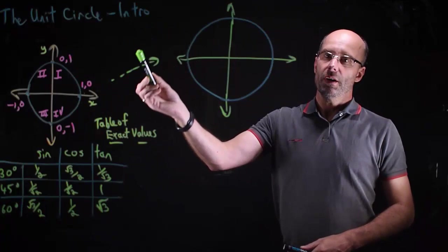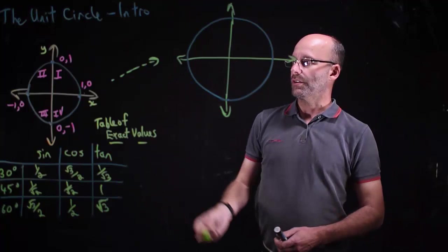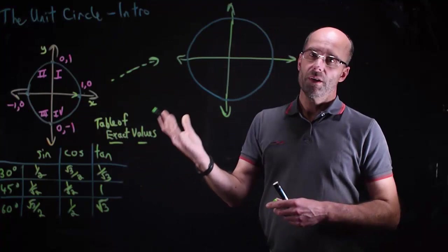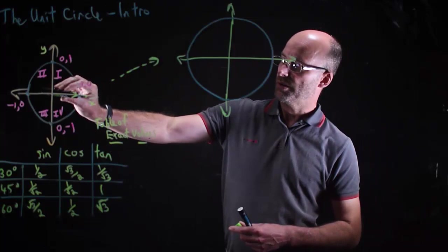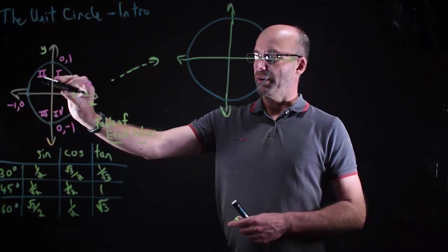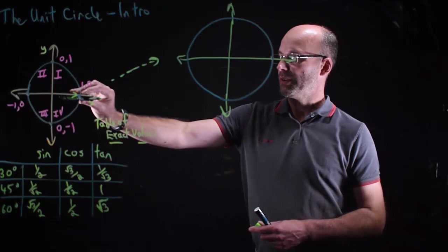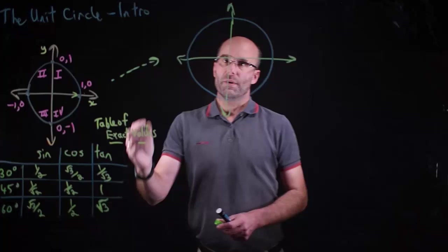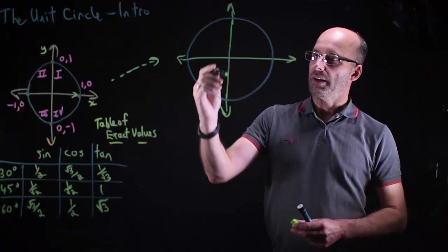In part two we're going to apply this to the unit circle. I've added a larger unit circle, and you'll notice it has Roman numerals — that means quadrant one. The convention for the radius arm is to swing anti-clockwise, which is the opposite of bearings. It goes anti-clockwise from zero all the way through to 360°, covering quadrants one, two, three, and four — the four quarters of the circle.